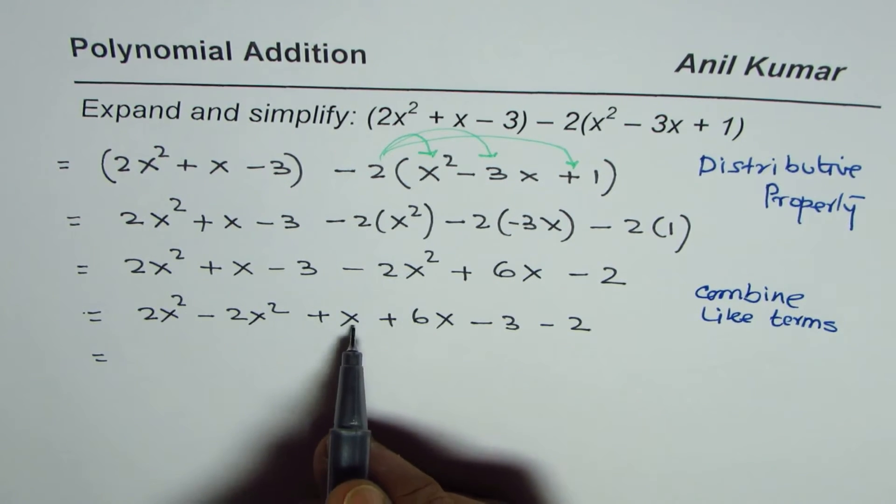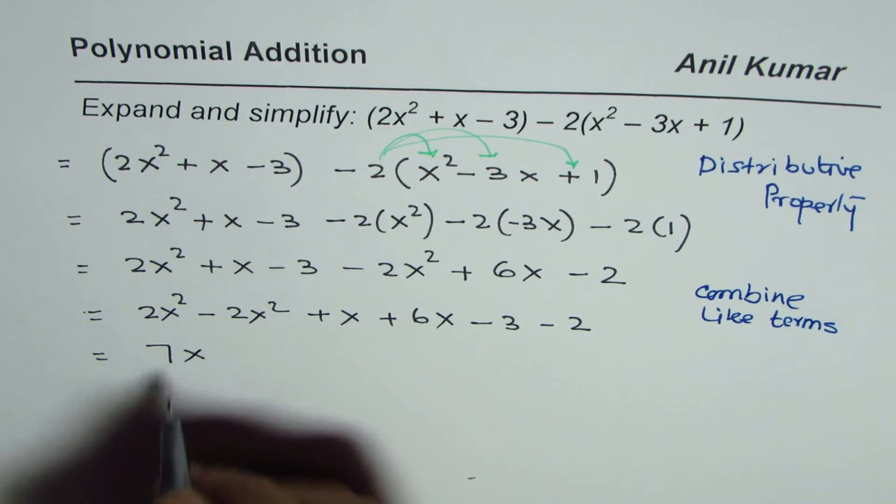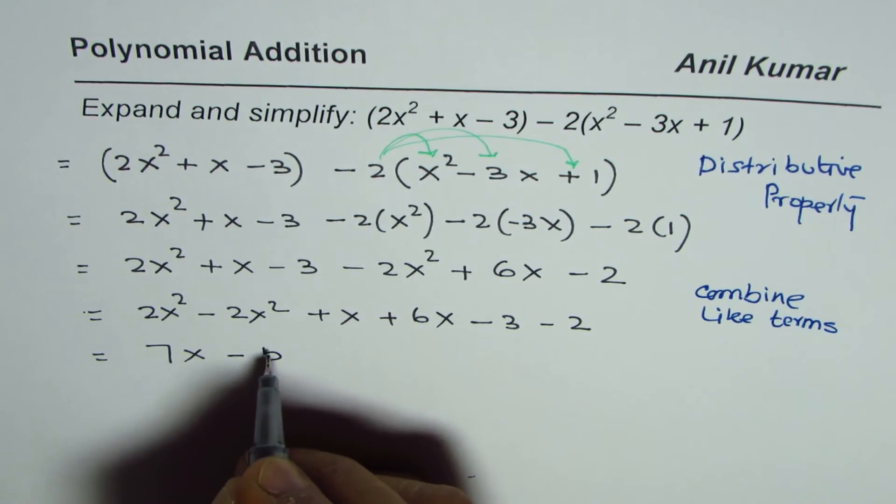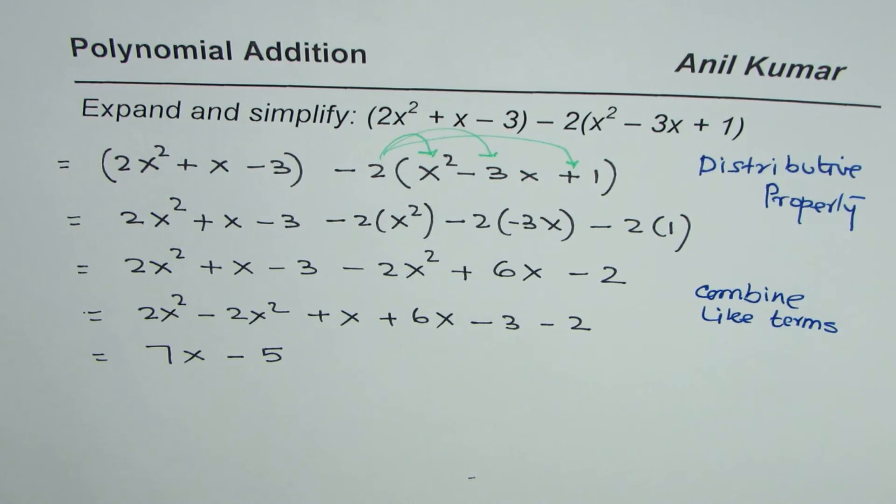2x² - 2x² is 0. x + 6x is 7x. -3 - 2 is -5. So 7x - 5 is the simpler form of the given polynomial. I hope that helps. Thank you.